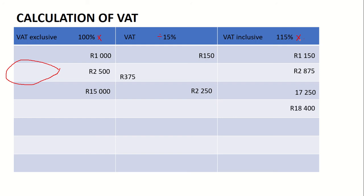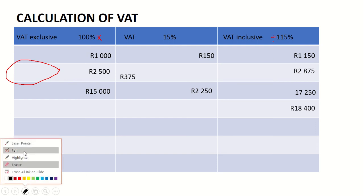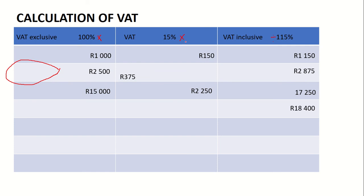If I have a VAT inclusive price — just like here I have R18400 — I'm simply going to divide by 115. So if I want the VAT amount I will take 18400 divided by 115 and multiply by 15. If I want the VAT exclusive amount, I will take 18400 divided by 115 and multiply by 100.